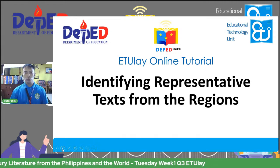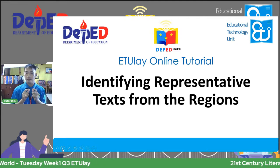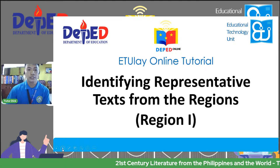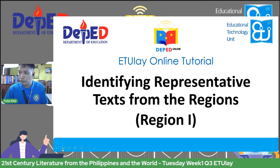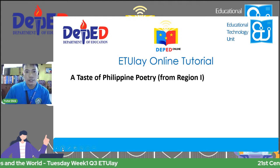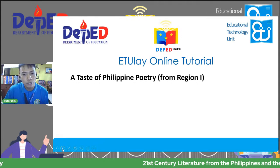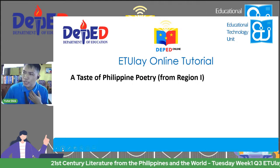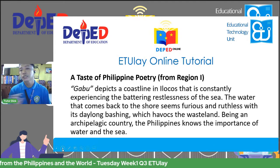Let us now move on to the second part of our lesson, which is to identify representative texts from the regions. For this particular online tutorial class, we go to region one, which is also known as the Ilocos region. We'll now have a taste of a certain poem from region one by Carlos Angeles. The title of the poem would be 'Gabu.'